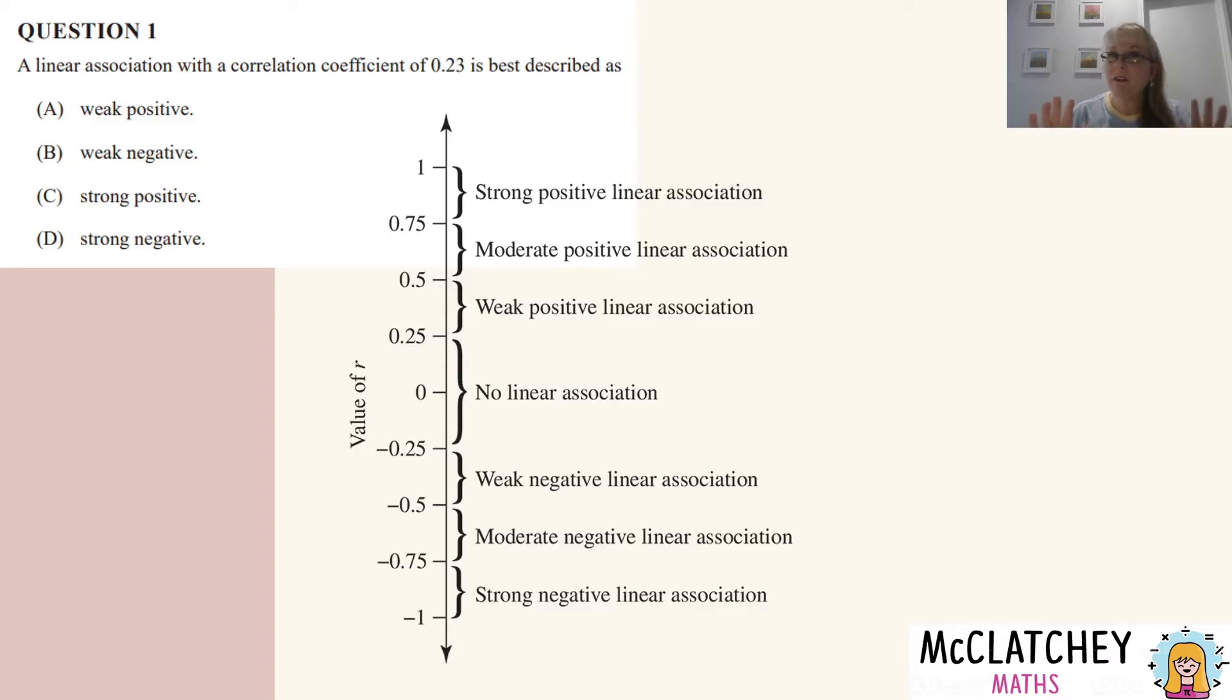They do vary a little bit from textbook to textbook and from source to source. So we now know that it's 0.23. So let's find that here on the scale. That's about there, which tells us that's in the range of no linear association at all. However, that's not even a choice. So it says here, best described. So the next best option is weak positive linear, which is our answer A.